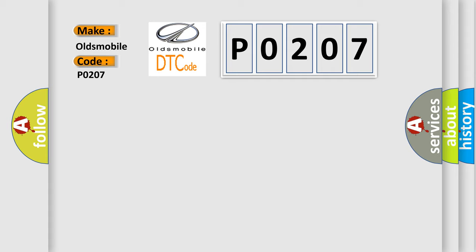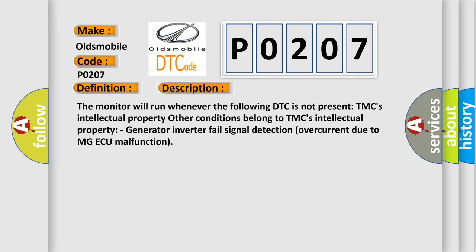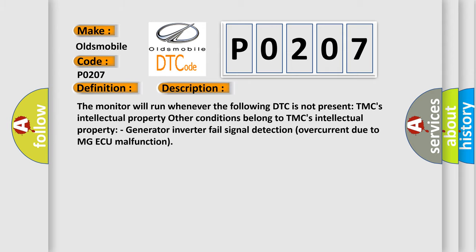The basic definition is Generator Inverter Performance. The monitor will run whenever the following DTC is not present. Other conditions belong to TMC's Intellectual Property. Generator Inverter Fail Signal Detection — Overcurrent Due to MGAQ Malfunction. This diagnostic error occurs most often in these cases.